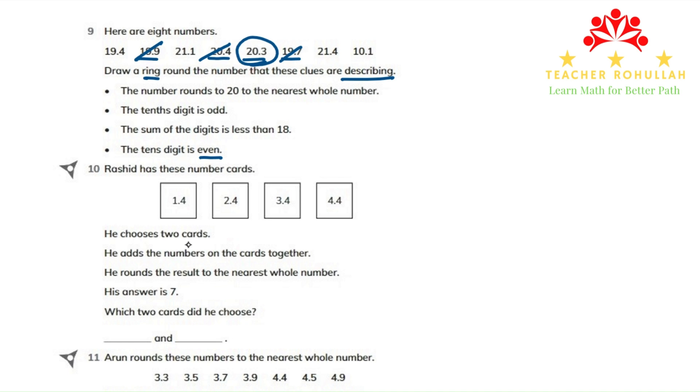He chooses two cards. He adds the numbers on the cards together. He rounds the result to the nearest whole number. His answer is 7. Which two cards did he choose?